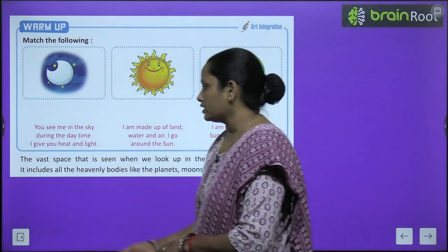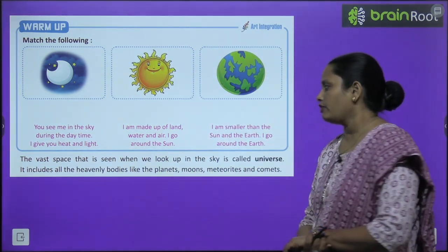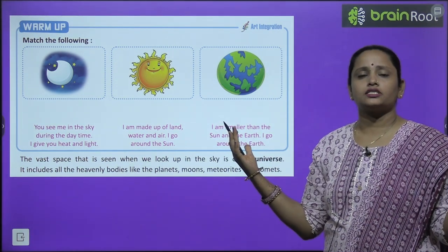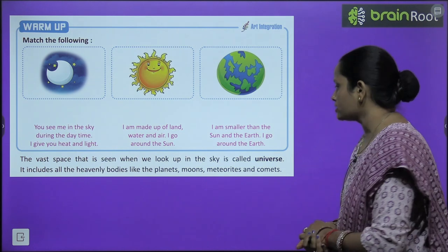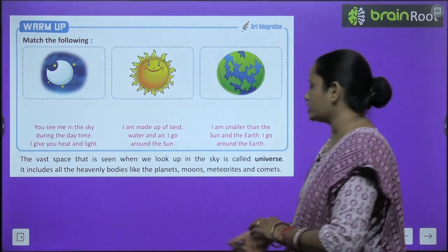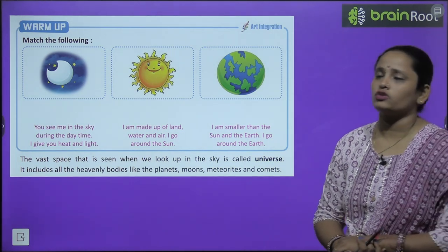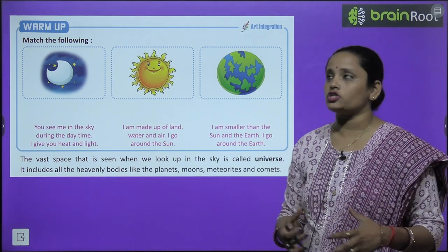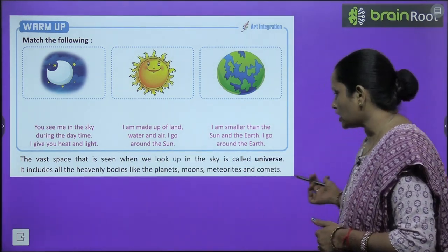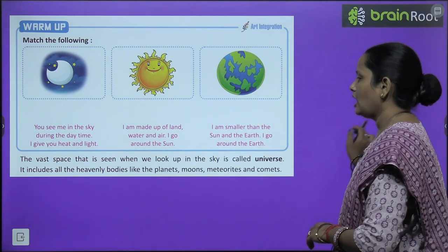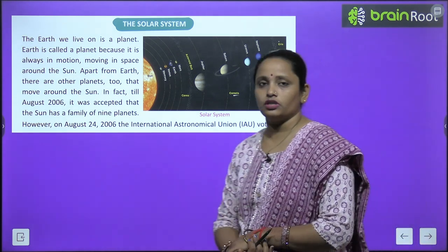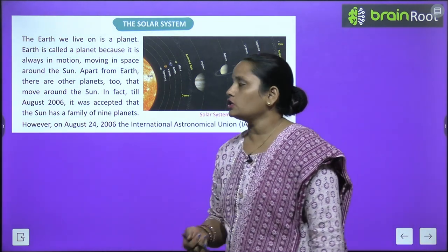The vast space that is seen when we look up in the sky is called the universe. The universe includes all the heavenly bodies like the planets, moon, meteoroids, and comets.